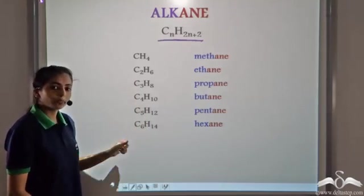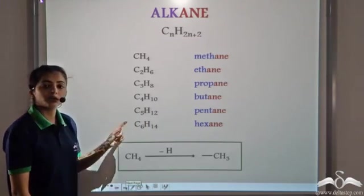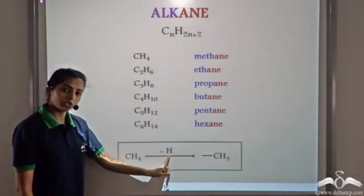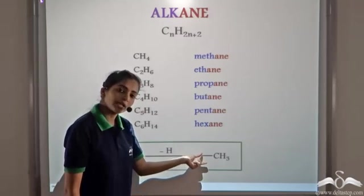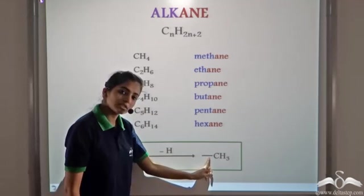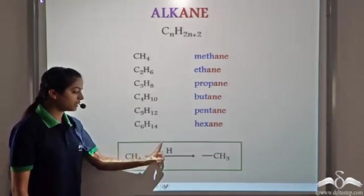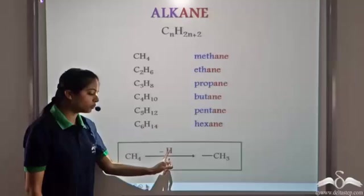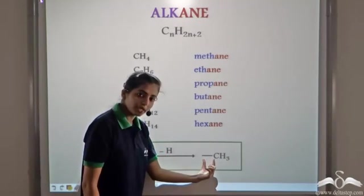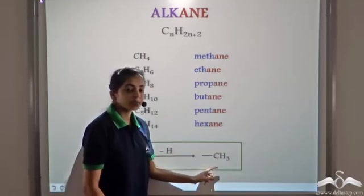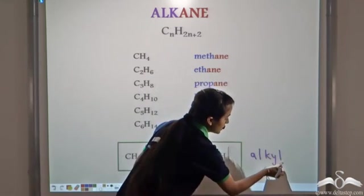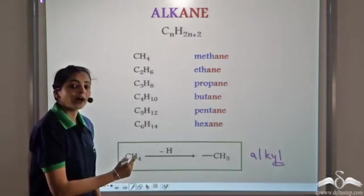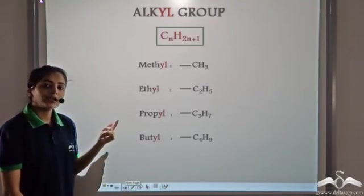Now, if we remove one hydrogen from any of these alkanes — say we start with methane, we have CH4 and we remove one hydrogen atom. We get CH3 and the fourth place is vacant. Any group can be present joined by this covalent bond. Whenever a hydrogen atom is removed from any of the alkanes, this group becomes an alkyl group. The suffix '-ane' is replaced by '-yl', so we get the alkyl groups.